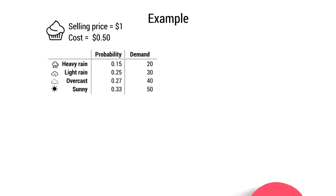Sales are very much dependent on the weather. If it rains very heavily — a 15% chance — she'll only be able to sell 20 cupcakes. If it's light rain — a 25% chance — she'll sell 30. If it's overcast — a 27% chance — she'll sell 40. And finally there's a 33% chance of it being sunny, in which case she will sell 50.